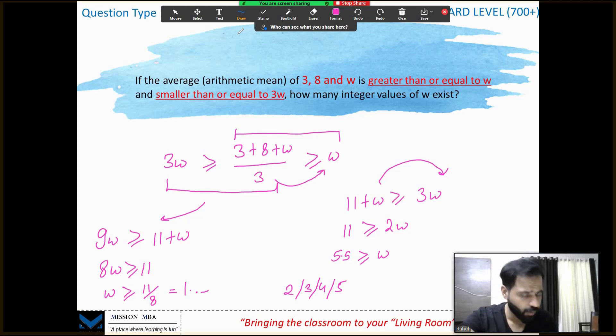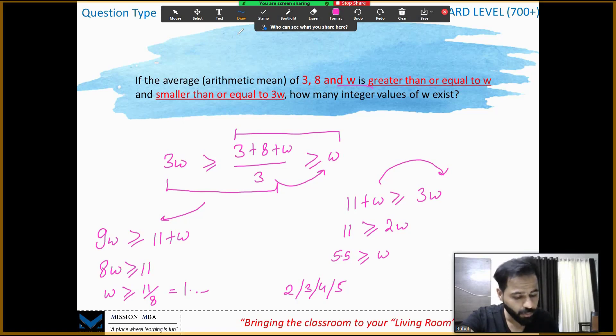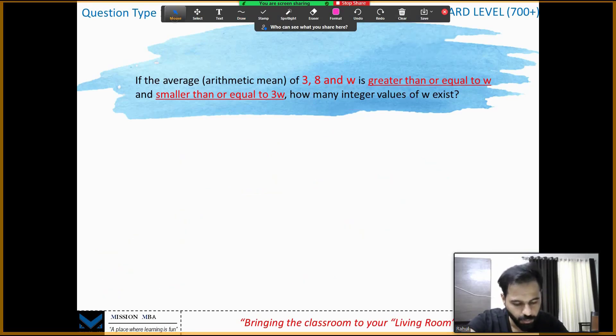So what are the values of w? 2, 3, 4, and 5. That's it. Greater than 1 point something, less than 5.5. I just have four values: 2, 3, 4, and 5. Why? You looked for integral values. So the answer is 4. I hope many of you have got the answer. If you haven't, we still need to practice a little bit more.